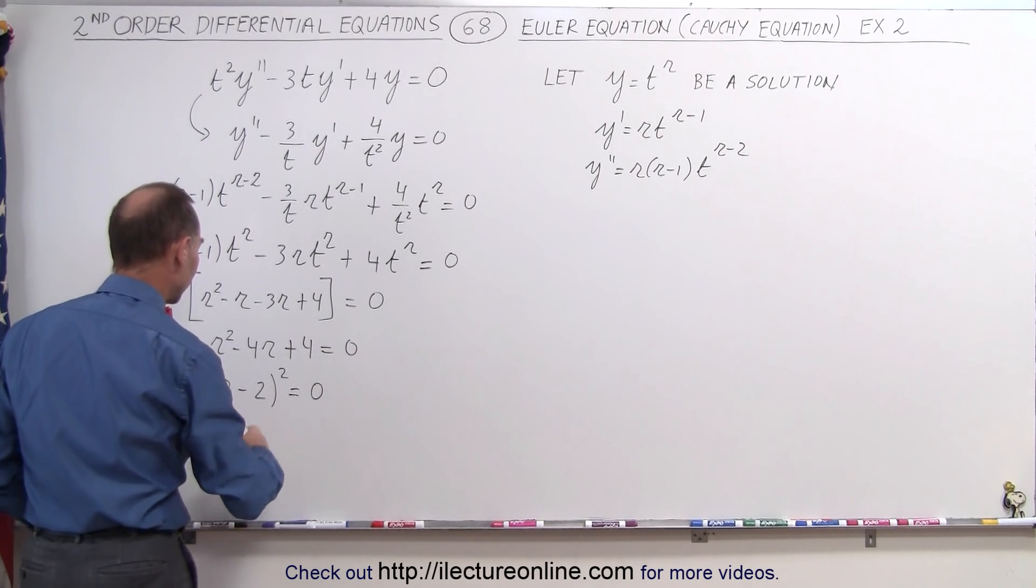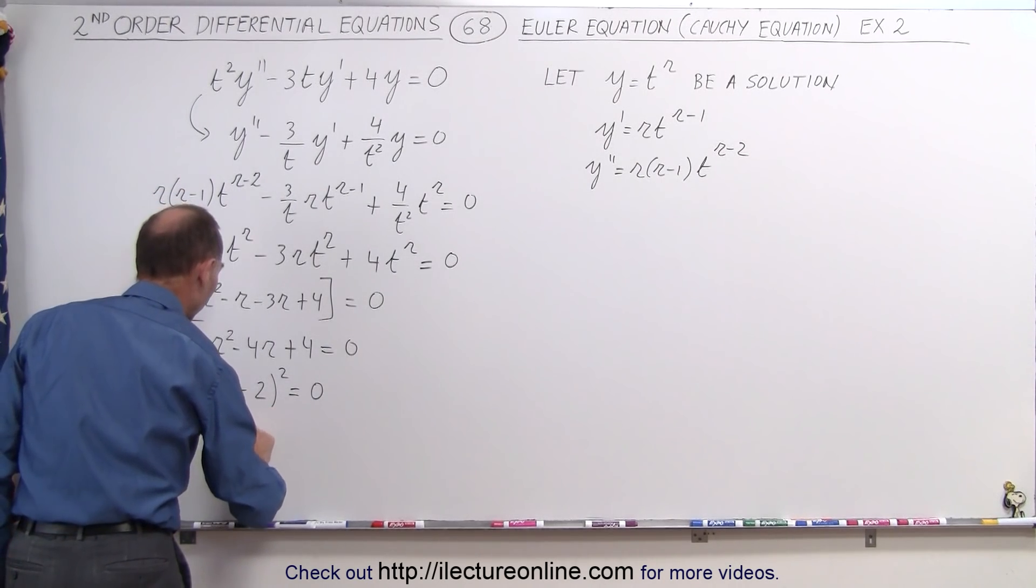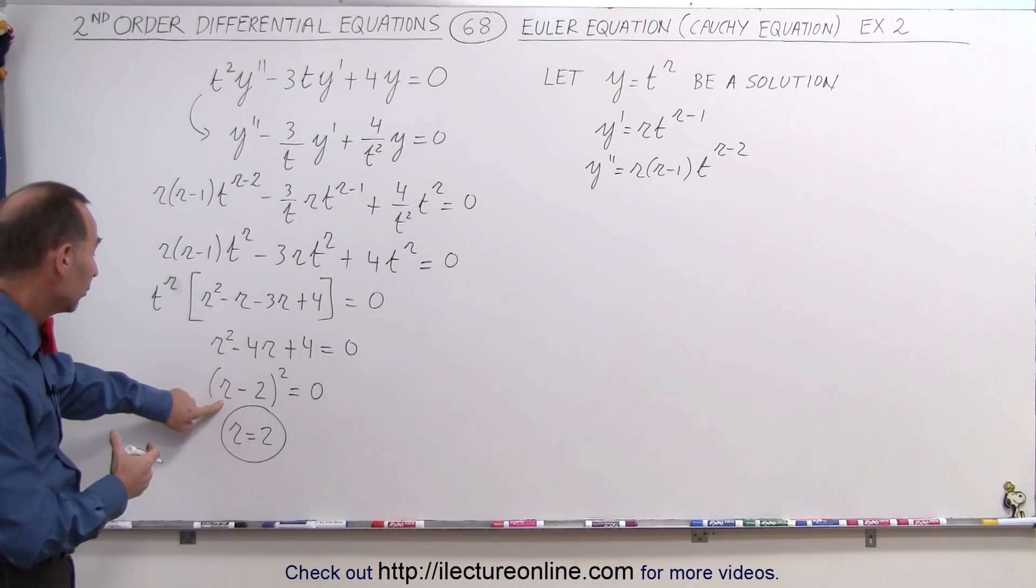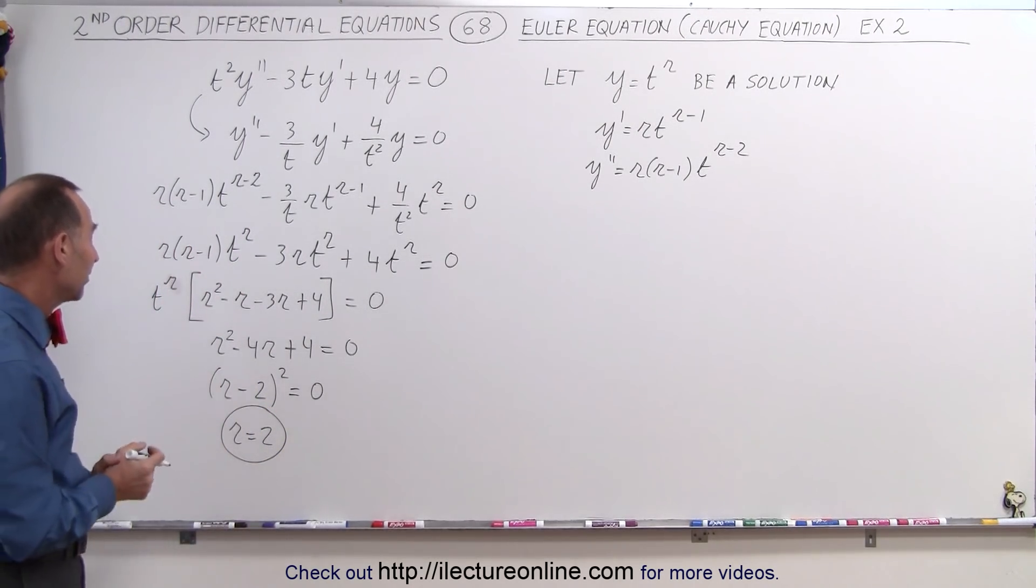So what happens here is that the only solution we have is r = 2. And of course, that's a double root, because r equals 2 twice.